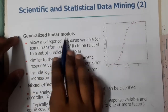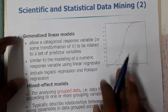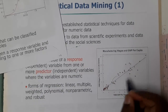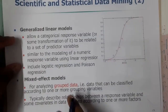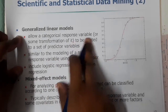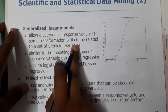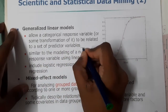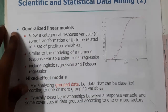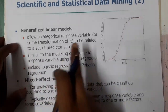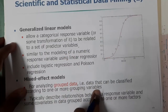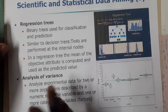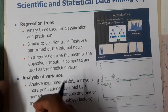The generalized linear model allows you to predict values based on previous values. It allows category response variables or some transformations of them to be related to a set of predictor variables. This concept applies to linear variables. The next type is regression trees, which are also possible.